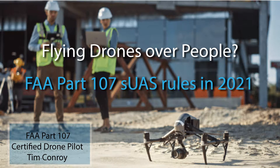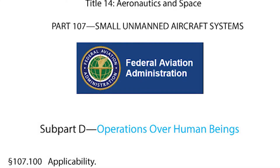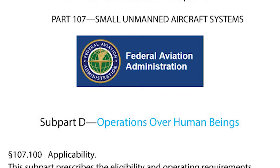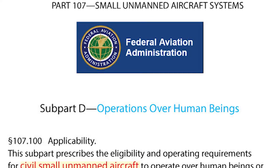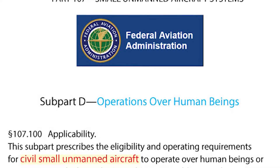Flying drones over people — FAA Part 107 rules in 2021. This is Subpart D, Operations Over Human Beings.